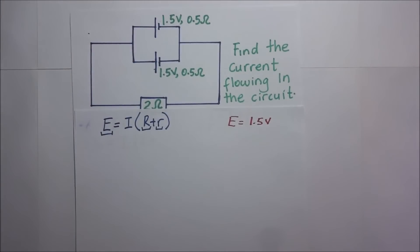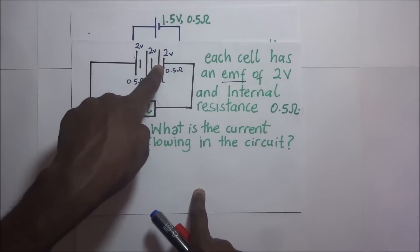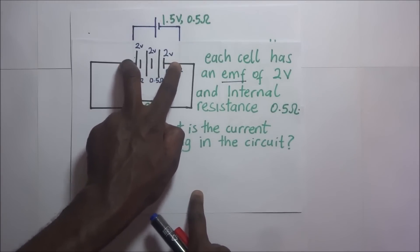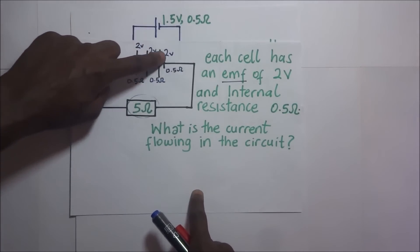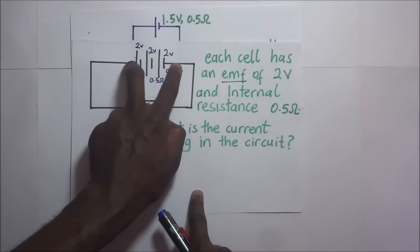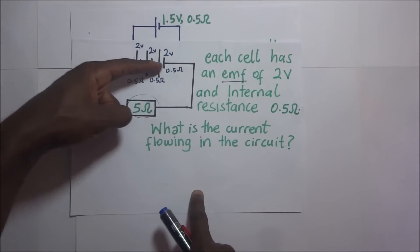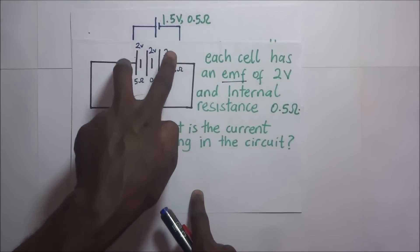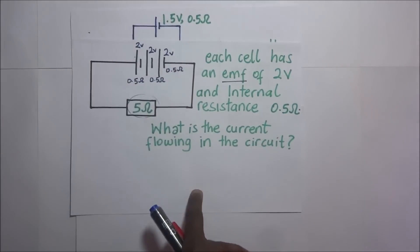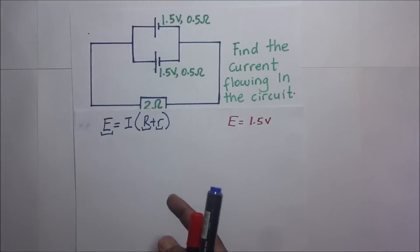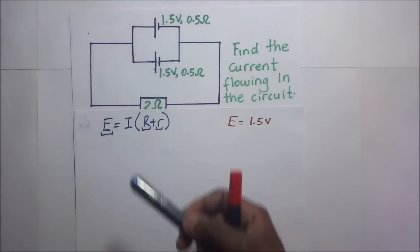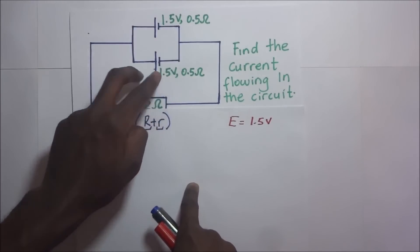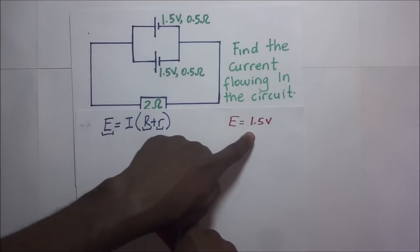In our previous example, the cells were in series, and to get the total EMF we added 2 plus 2 plus 2 to get 6 volts — the same way we add potential differences across series resistors. Now when cells are in parallel, the potential difference across each parallel cell is the same, so the effective EMF here is 1.5 volts.